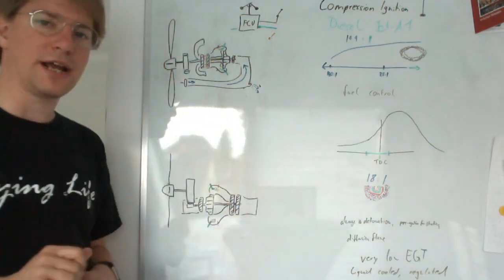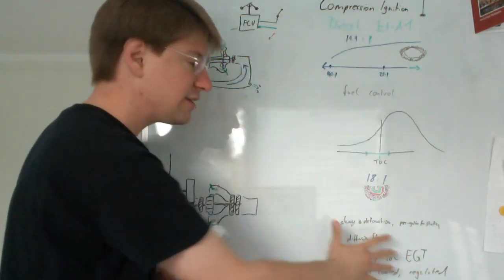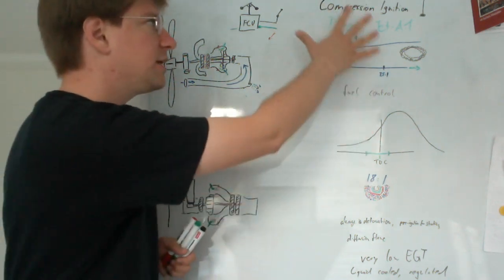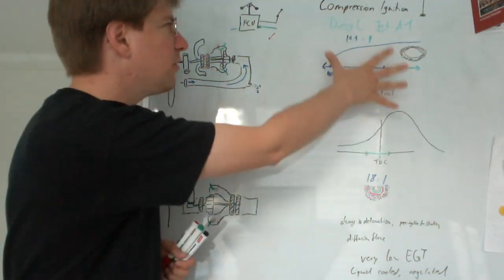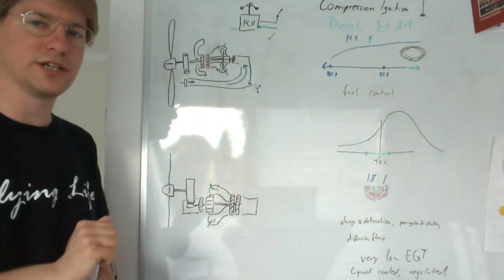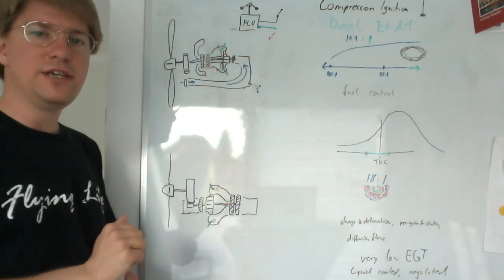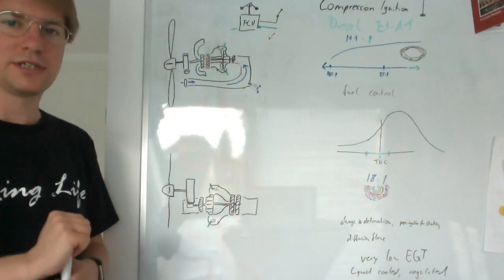So on the whiteboard on the right side, I have left the column from the last video with the compression ignition diesel engine, and on the left I have now added the common turboprop types.